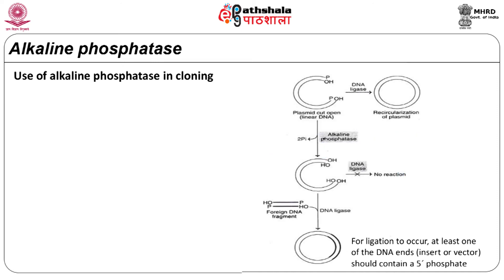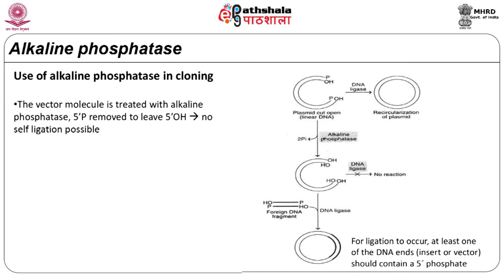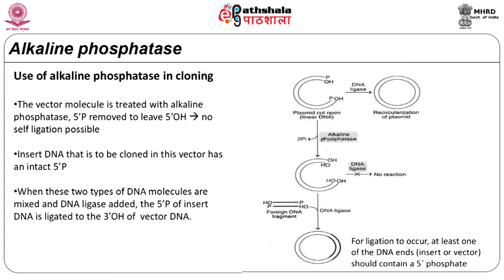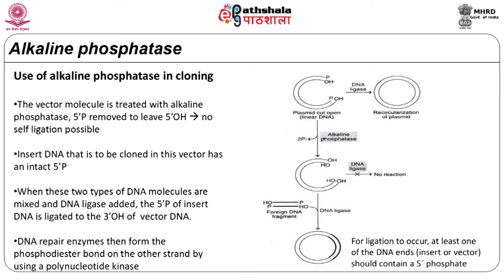Alkaline phosphatase is used in cloning. The vector molecule is treated with alkaline phosphatase where the 5 prime phosphate is removed to leave a 5 prime OH, and no self-ligation is possible. The DNA that is to be cloned is inserted into this vector. When these two types of DNA molecules are mixed and DNA ligase is added, the 5 prime phosphate of the insert DNA is ligated to the 3 prime OH of vector DNA. The DNA repair enzymes then form the phosphodiester bond on the other strand by using a polynucleotide kinase.